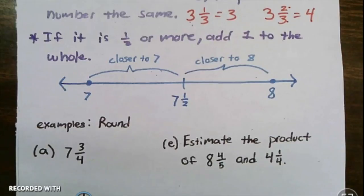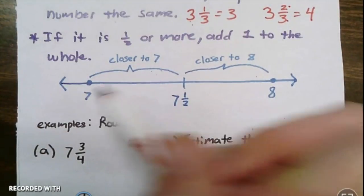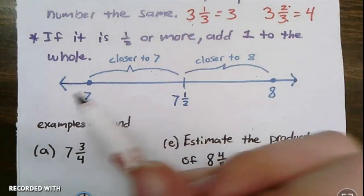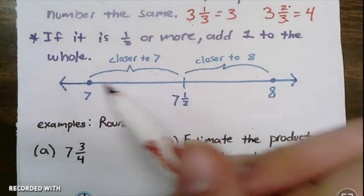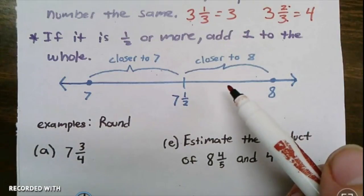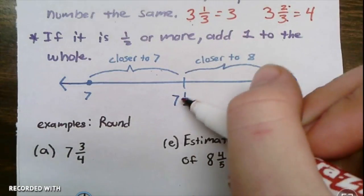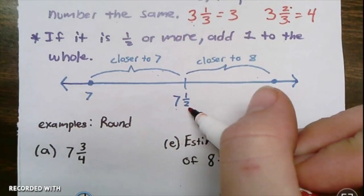Here's what's basically happening. Here's a number line. Here I've got seven, there I've got eight, and in between seven and eight are all these other numbers. They're shown by fractions, they're shown by decimals, so in the middle, right in the middle, we have seven and a half.